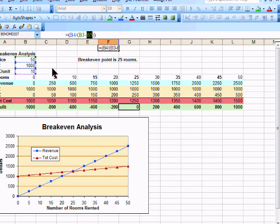So in this one, when we have a fixed cost of 1,000, price of 50, and variable cost, it's going to simply calculate to 25.